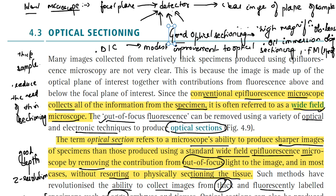To summarize: to improve optical sectioning, differential interference contrast can be used, fluorescence microscopy can be used, and the third method is deconvolution.